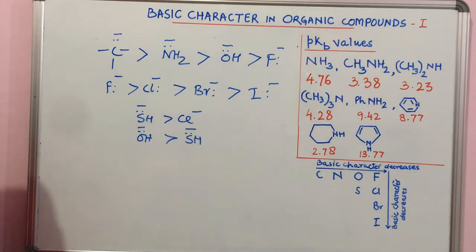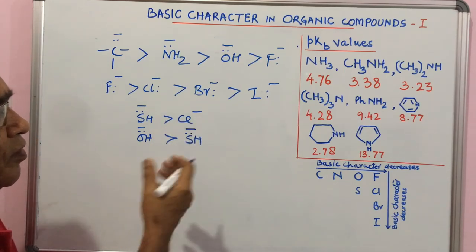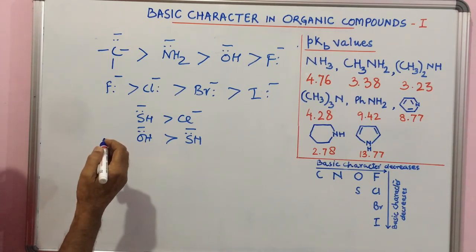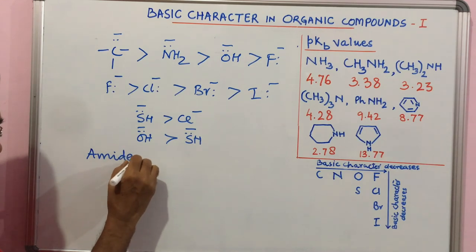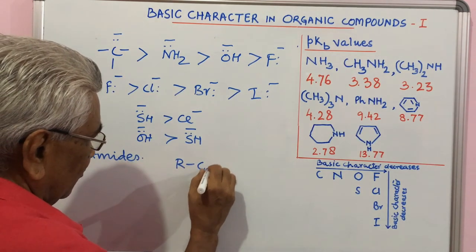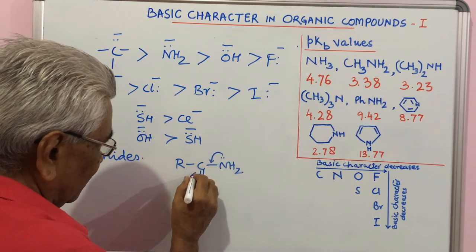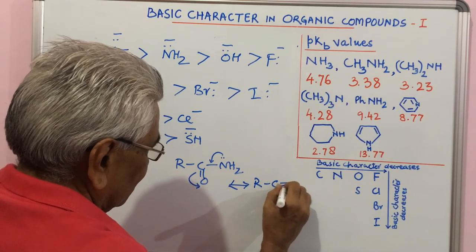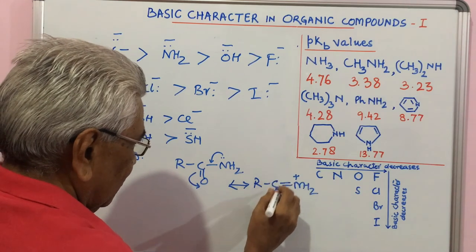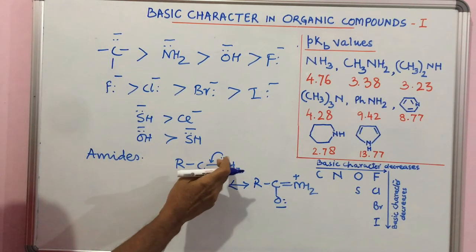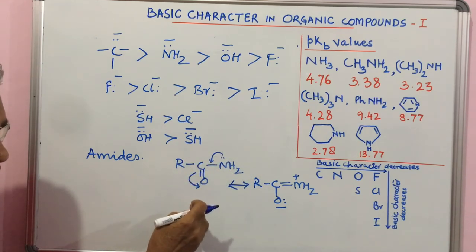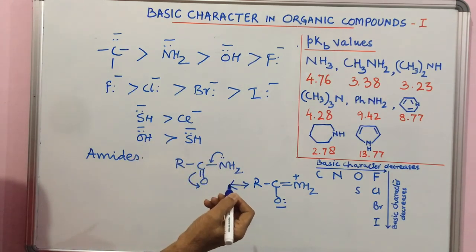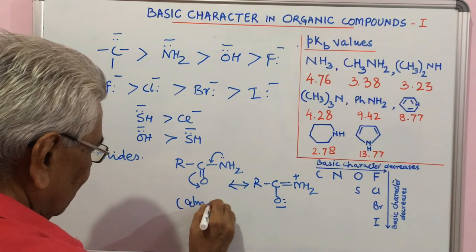If the electron pair availability is completely lost due to structural features that will make it devoid of basic character. Amides - if you take R-C=O-NH2, there is a resonance here and you have these two resonating structures. You are finding that this electron pair is involved in resonance and is almost not available, and moreover a plus charge developed here repels proton. That makes it almost non-basic.